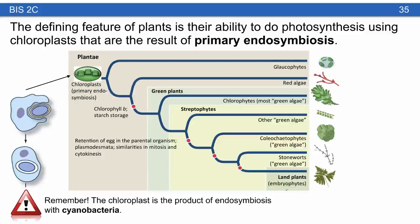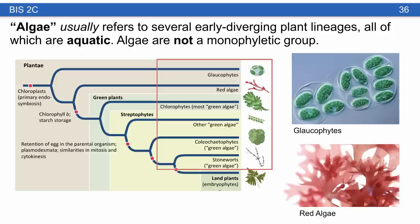The defining feature of plants is their ability to do photosynthesis using chloroplasts that are the result of primary endosymbiosis. All plants have chloroplasts descended from the original cell that engulfed a cyanobacterium. Algae usually refers to several early-diverging plant lineages, all of which are aquatic, but be careful — algae is sometimes also used to refer to things like brown algae or kelp, which are not even plants, and algae are not a monophyletic group. Glaucophytes stand out because they retain a layer of peptidoglycan from their original endosymbiosis with cyanobacteria — good support that the chloroplast arose from endosymbiosis.